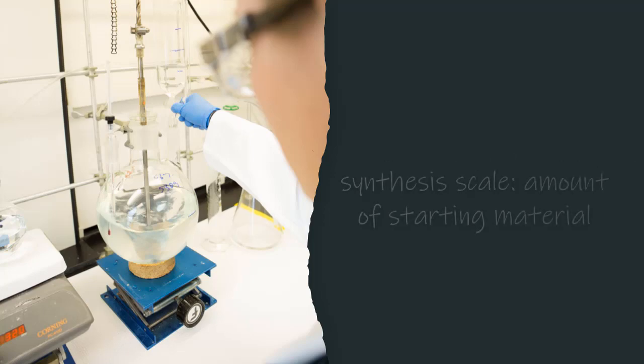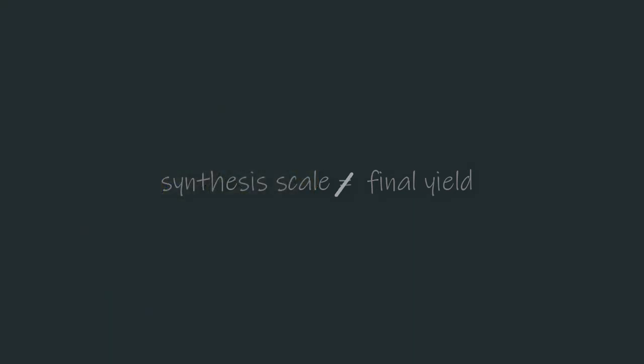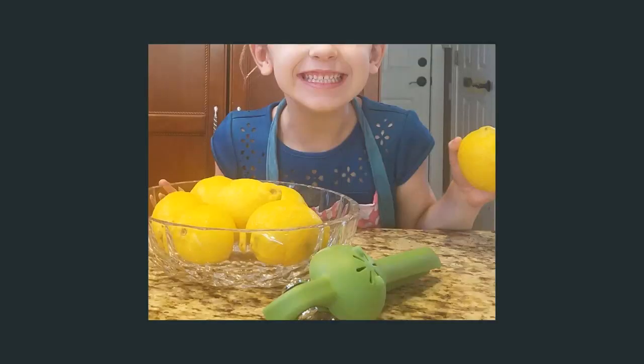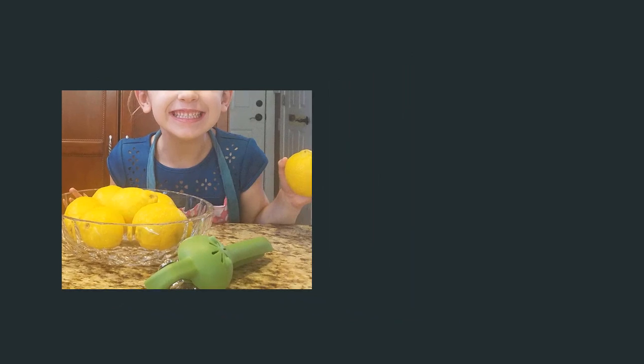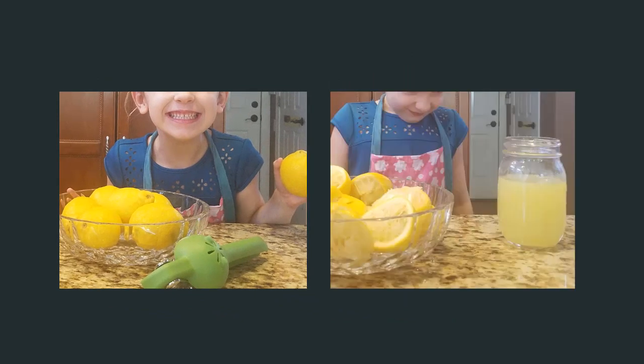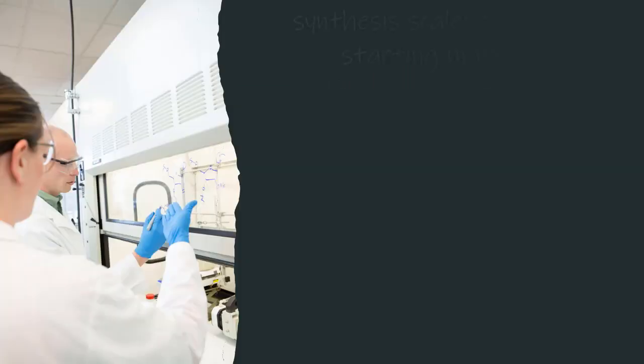A synthesis scale refers to the amount of starting material that will be used in manufacturing. This number will not be the same as the final yield or product that you receive. I like to describe it like making lemonade. You may start with five pounds of lemons but you don't end up with five pounds of lemon juice. So the synthesis scale is a well-defined amount of how much of the components will be put into the reaction.